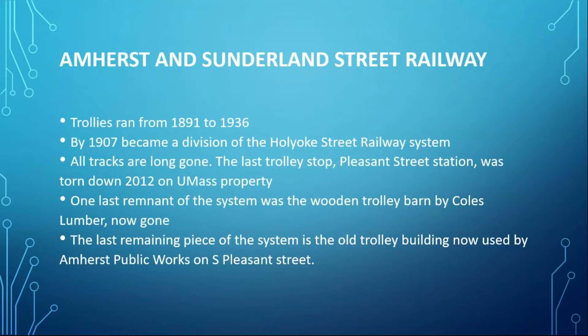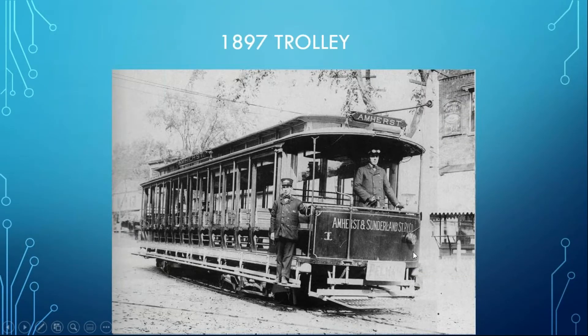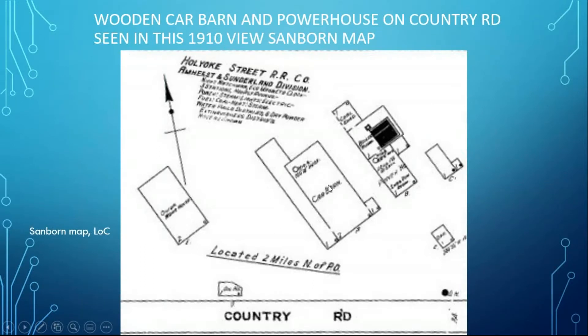Trolleys ran just about everywhere from about 1891 to 1936. By 1907, this small section became a division of the Holyoke Street Railway system. All those tracks are long gone. The last trolley stop — the Pleasant Street station — was torn down in 2012 on UMass property during some kind of power line move. The historical society was upset about that, but you can't stop the state. There are a couple of remnants still left of this system — a wooden trolley barn by Cole's Lumber in North Amherst has just fallen over. There's a picture of one of their open trolleys, headed to Amherst from Sunderland.